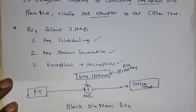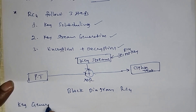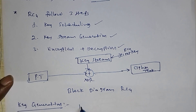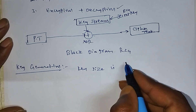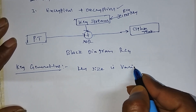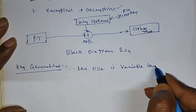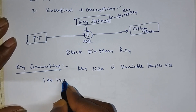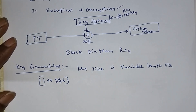First, we will see key generation. What is the meaning of key generation? Key generation means the key size is of variable length. Generally, the key size varies between 1 to 256 bytes.